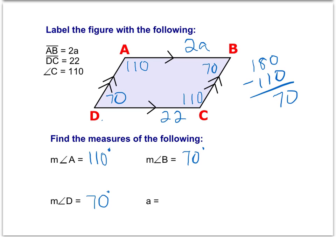And then the last piece of this is to find out what the value of a is. And that's where we see that a is given as one of the side measures. So we're going to go ahead, knowing that opposite sides are congruent, we can set up the equation and solve for the missing variable.